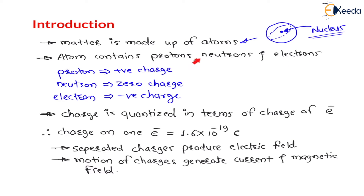This you have studied at school level. Proton means it is having positive charge. Neutron means it is having zero charge — there is no charge. And electron means it is having negative charge. These electrons are revolving around the nucleus in orbits. This Bohr's model you have already studied.